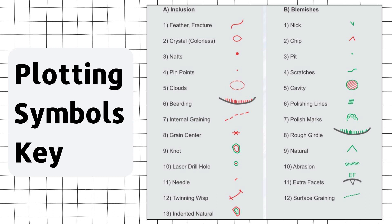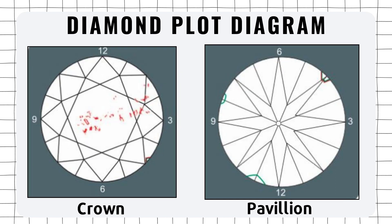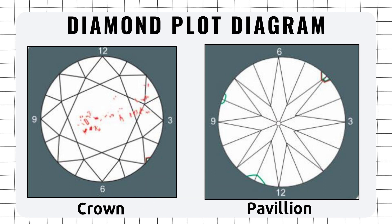As you can see in this picture, you can see all of these inclusions and the diagram used for them. The diagram we are going to draw on is going to be a basic circle — this is called a diamond plot diagram. These are basically two simple circles with markings like a clock. The stone is flipped on the right side: while plotting inclusions or blemishes, we simply flip the stone, so the six goes to the twelve area and the twelve comes to the six area. That is how we plot the lower part of the stone. For the upper part, it's exactly like a clock from twelve to six and then back to twelve.